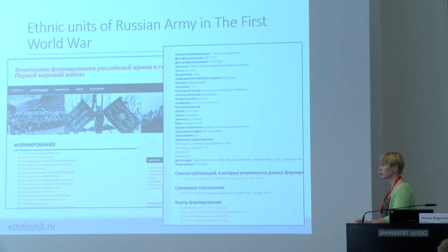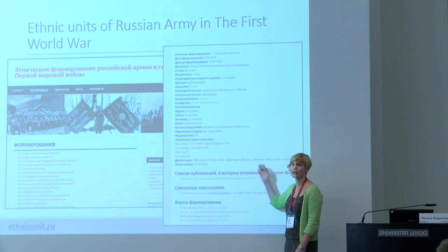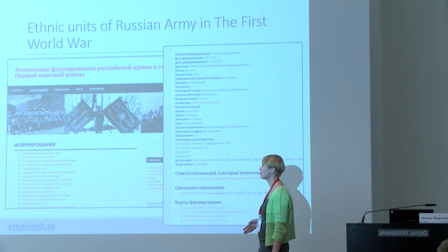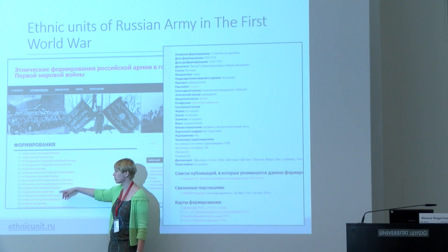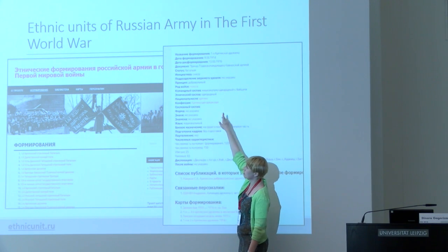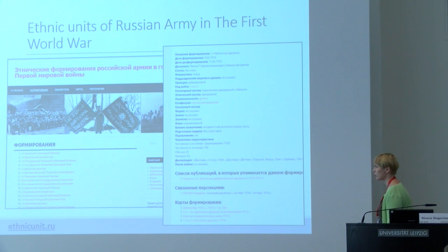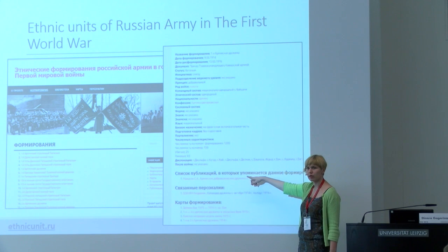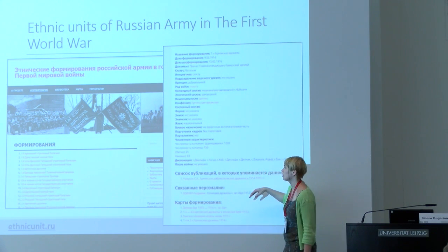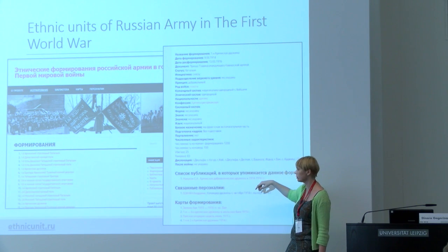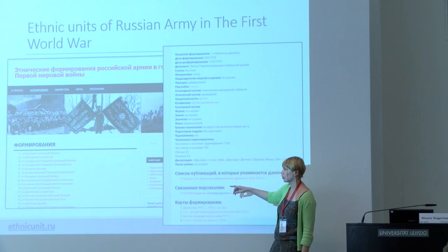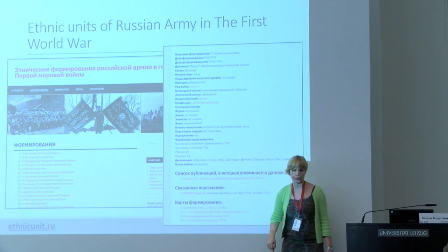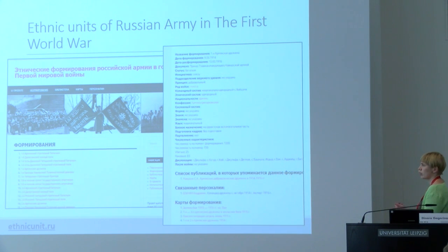The second example of a history-oriented information system is 'Ethnic Units of the Russian Army.' This is a bilingual presentation — most of our systems have only a Russian interface, I'm sorry. Here we have a list of ethnic units, and for each unit we have a very detailed description in natural language. We also have a list of publications in which the ethnic unit is mentioned, a list of personalities connected with this unit, and a list of maps which are uploaded to our system and also connected with this unit.